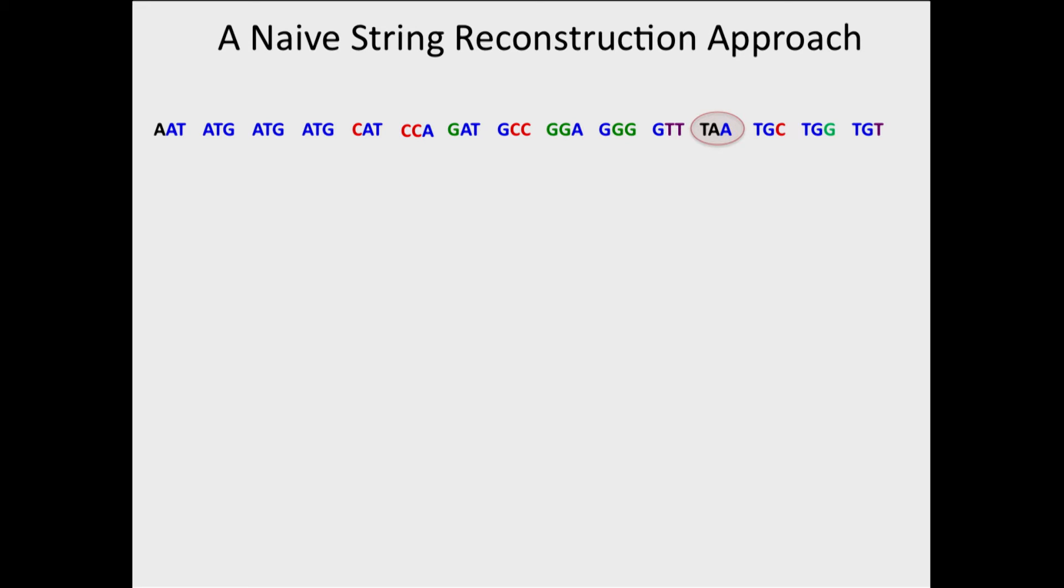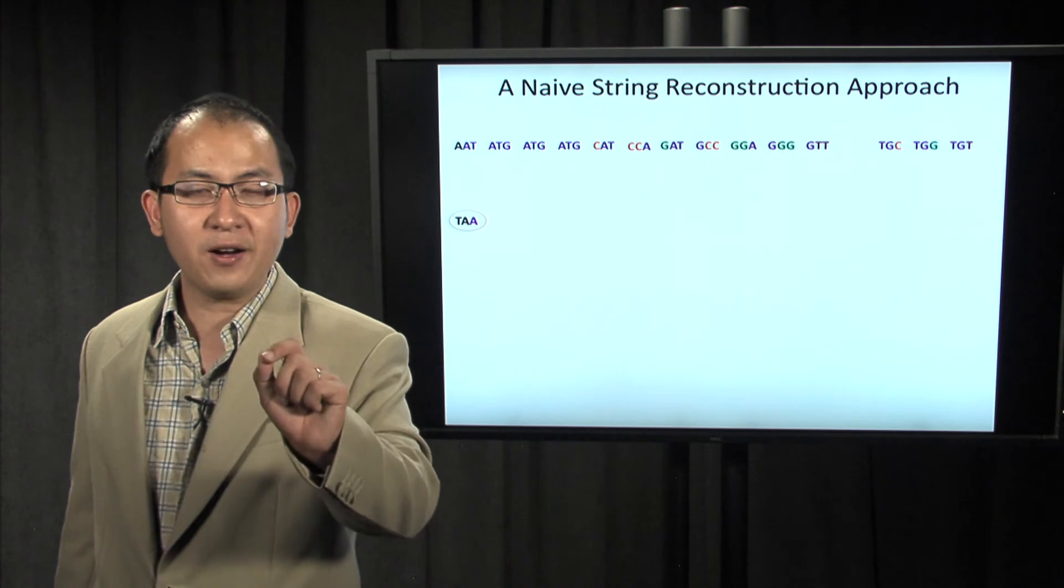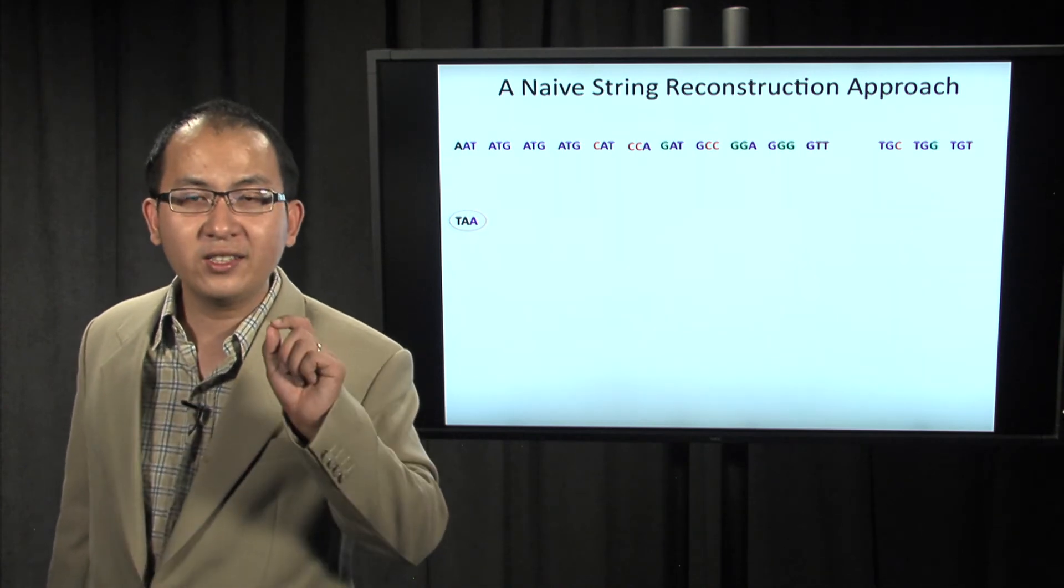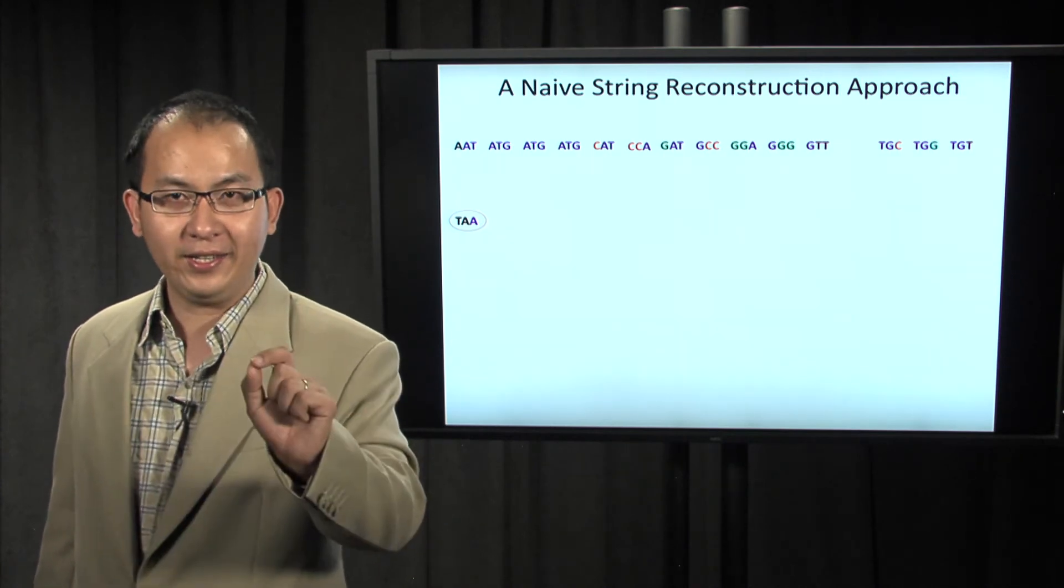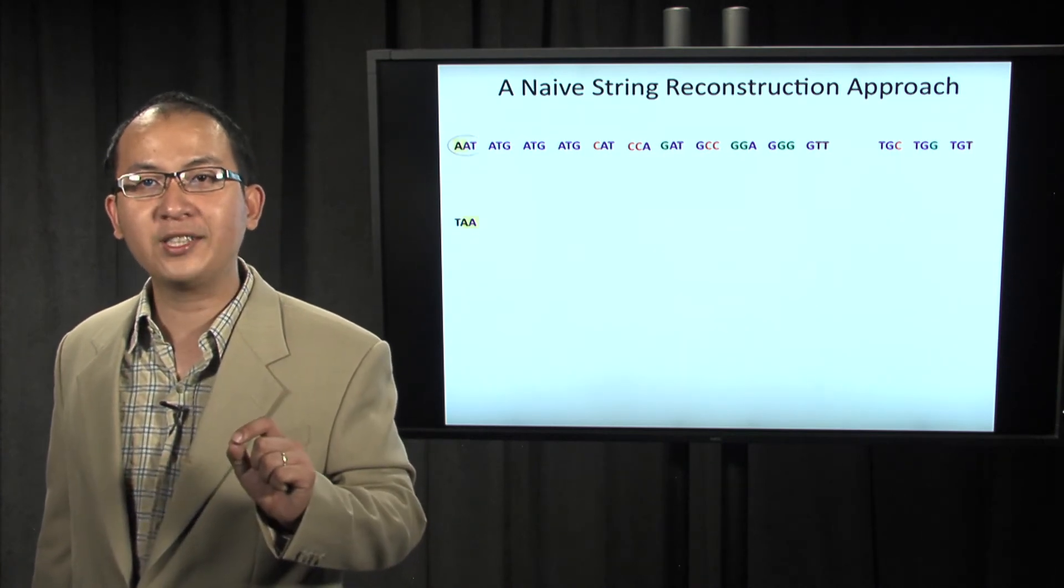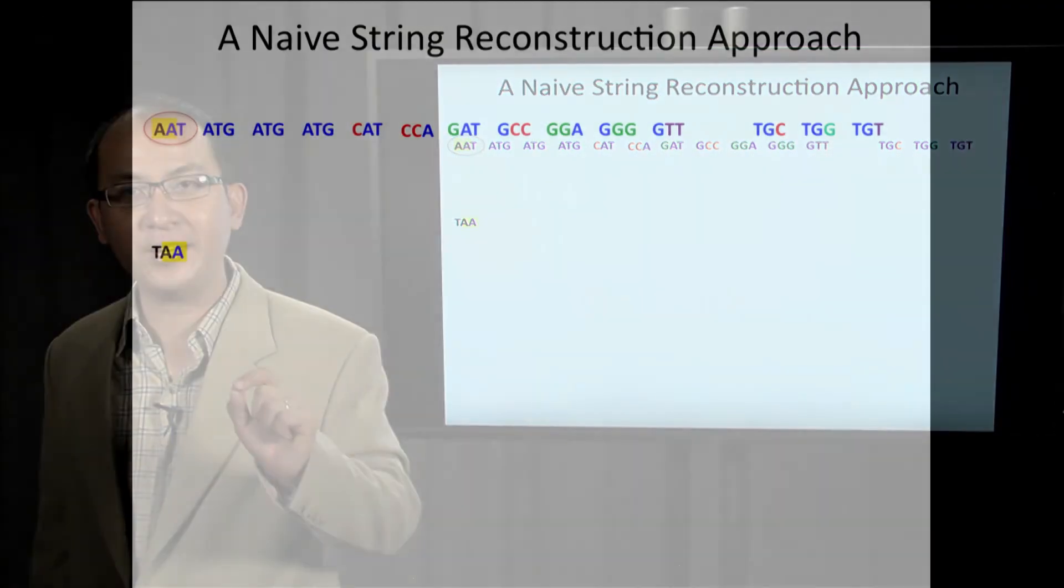Well, let's start with TAA and assume that this is the first k-mer of the genome. If TAA is the first k-mer of the genome, then what is the second k-mer? The second k-mer should start with AA. There's one k-mer starting with AA, that is AAT.